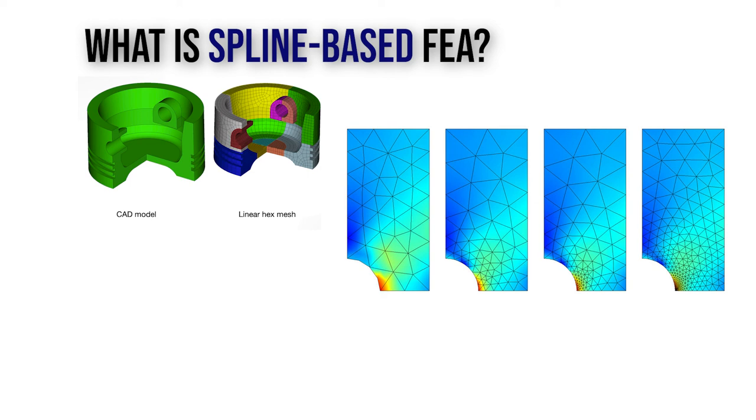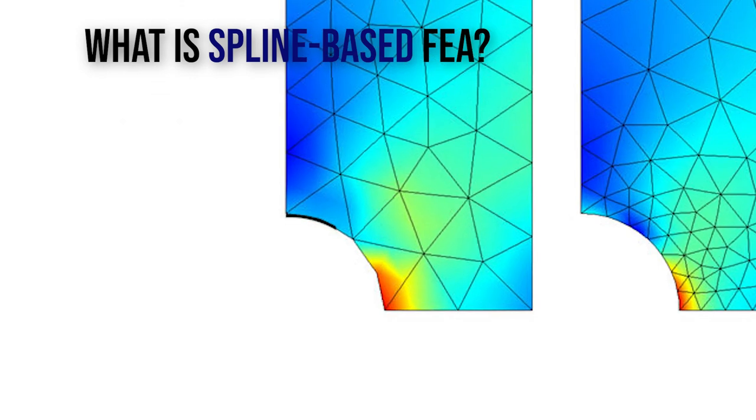But what if you could analyze on curved lines? How many elements would you need here? One curvy line. In Spline-Based Simulation, you can match the geometry more easily and use less elements.